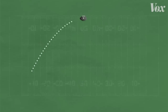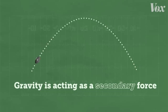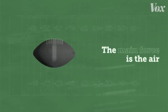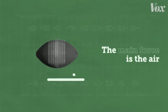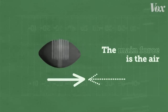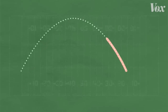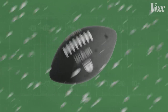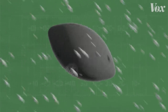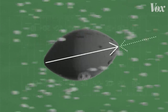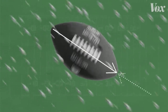When you throw a nice spiral pass, gravity is only acting as a secondary force on the ball. Gravity is trying to pull the ball down, usually making its path to the ground look like a parabola. But the main force acting against the ball is the air molecules pushing against it as it flies through the air. The ball pushes against the air, and the air pushes back against it. But because gravity makes the ball's trajectory a parabola, the air pushing against the ball changes directions as it flies. When the ball is moving up, the molecules are acting as downward pressure. When it's coming down, the molecules are pushing up.